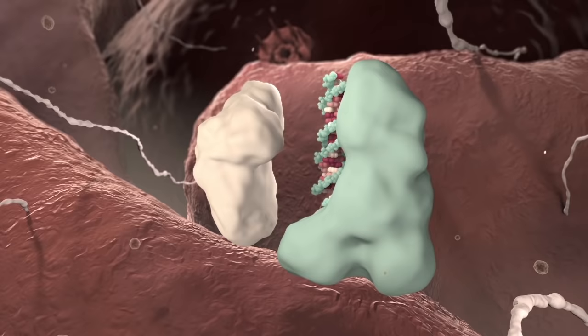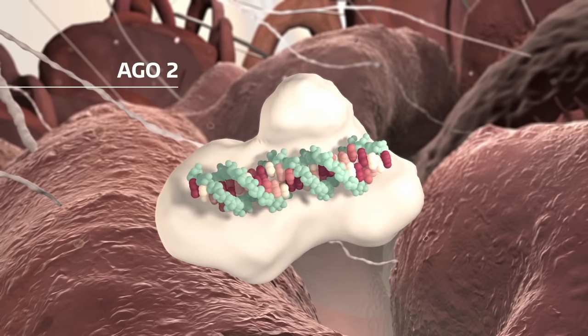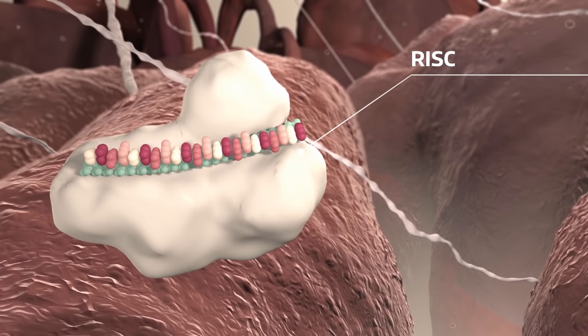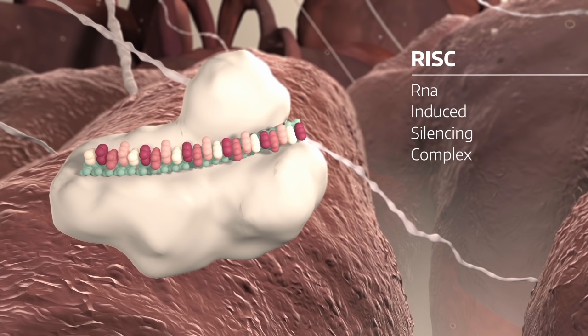In the next step, an argonaute protein AGO2 interacts with DICER to bind the microRNA. The microRNA is unwound and one strand is released. The remaining strand, called the guide strand, interacts with AGO2 and some additional proteins to form the RISC, the RNA-induced silencing complex.